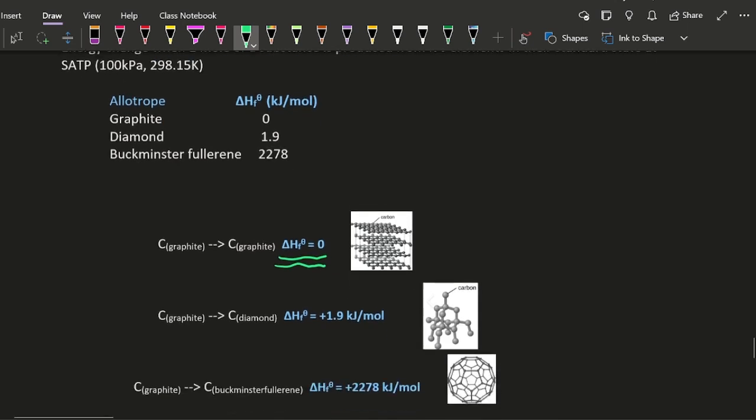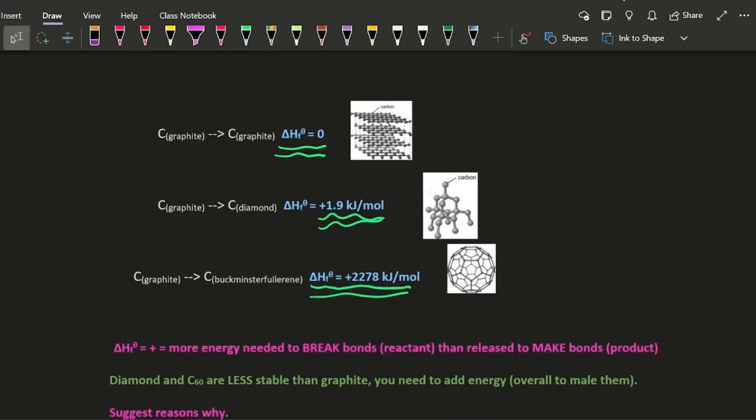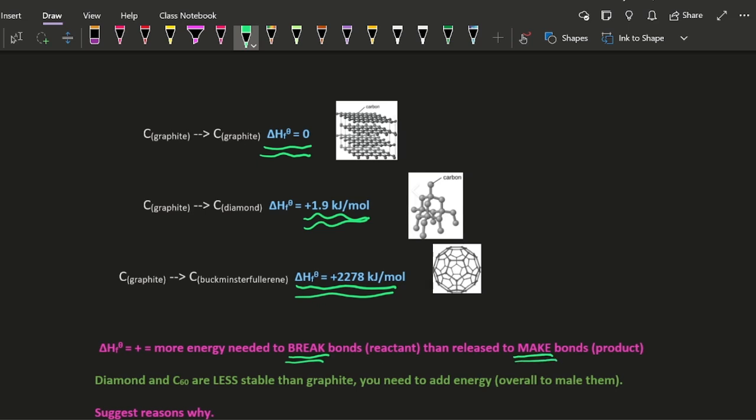But looking at diamond and buckminsterfullerene, they are endothermic. So that means that when you turn graphite into diamond or buckminsterfullerene, more energy is needed to break the bonds than is released when you make the bonds. This is an endothermic reaction.